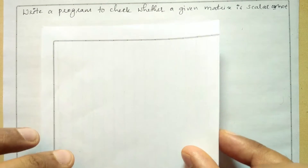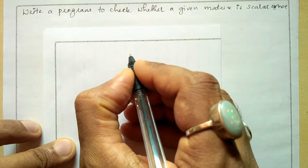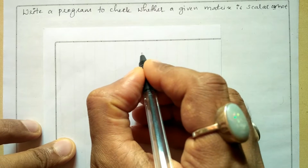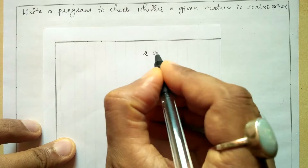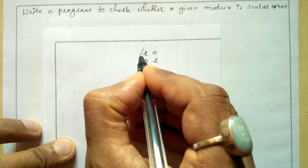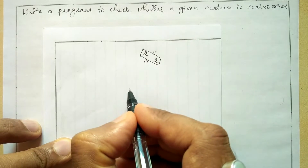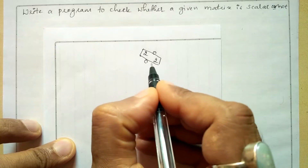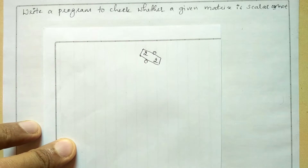Let us understand what we mean by scalar matrix. It is a square matrix whose diagonal elements are the same. For example, if we write a two-row and two-column matrix, then the principal diagonal elements must be the same and the rest of the elements must be set to zero. Such a matrix is called a scalar matrix.